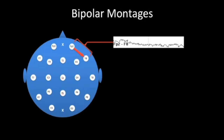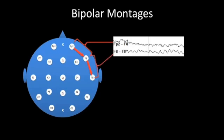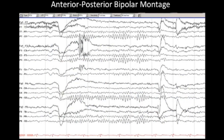One of the commonest bipolar montages is the anterior-posterior bipolar montage. Going through this systematically, we start by comparing FP2 to F8, generating a tracing called a channel or derivation. We then continue posteriorly from F8 to T8, generating another channel. We continue posteriorly to generate a chain of electrodes along the temporal aspect of the head, and eventually put a number of these chains together to generate a montage.